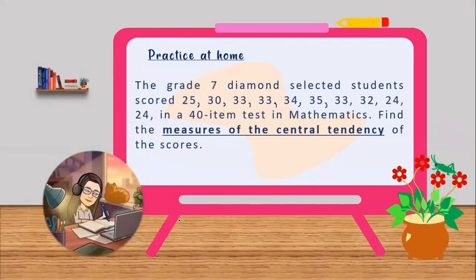Practice at home. Problem: The grade 7 diamond selected students scored 25, 30, 33, 33, 34, 35, 33, 32, 24, and 24 in a 40-item test in mathematics. Find the measures of central tendency of the scores. Good luck!